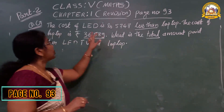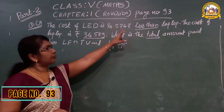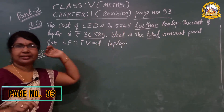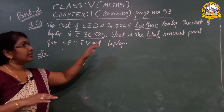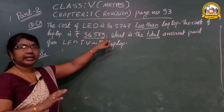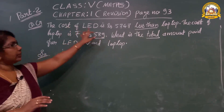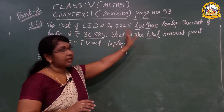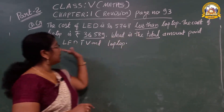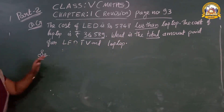Look at question number G. The cost of an LED TV is ₹5,747 less than a laptop. What do you mean by 'less than'? Less than means you have to subtract. The cost of the laptop is ₹36,589. The cost of the LED TV is not given directly — it is given as less than the laptop, so we have to find the total amount for the LED TV and the laptop.